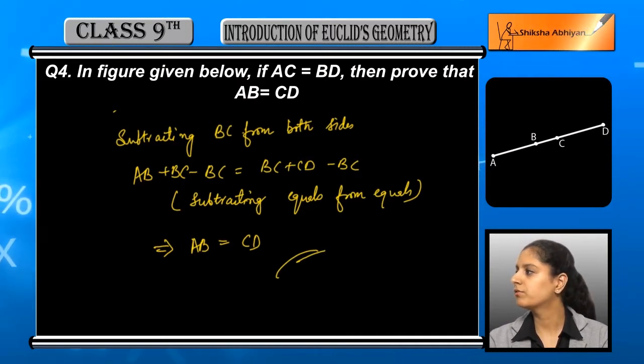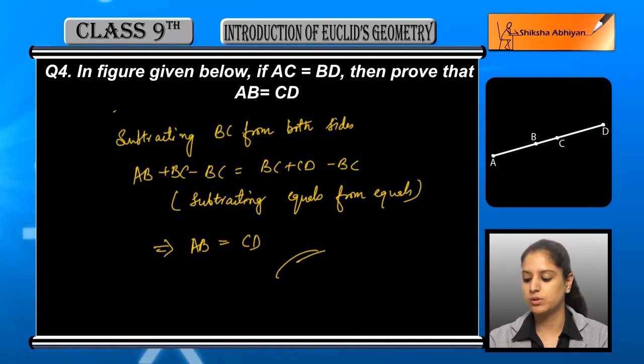So what we are left with is AB is equal to CD. This is what we were supposed to prove. Hence, AB and CD are equal.